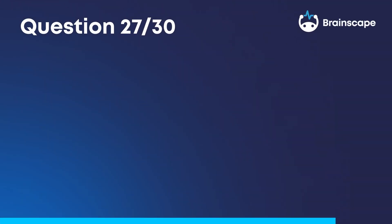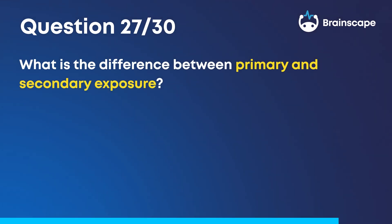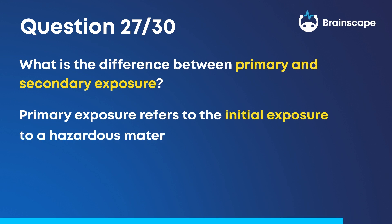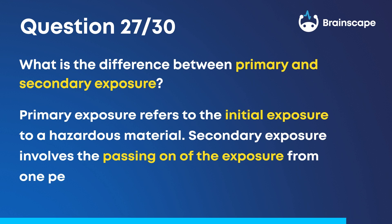Question 27. What is the difference between primary and secondary exposure? Primary exposure refers to the initial exposure to a hazardous material. Secondary exposure involves the passing on of the exposure from one person to another.